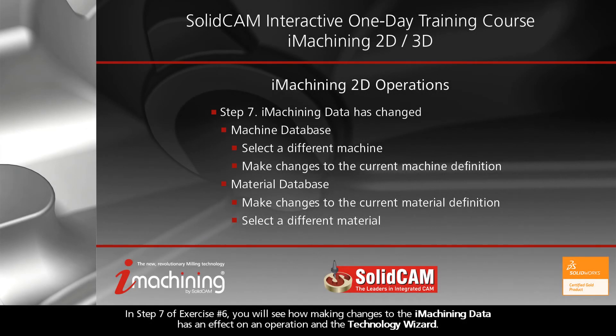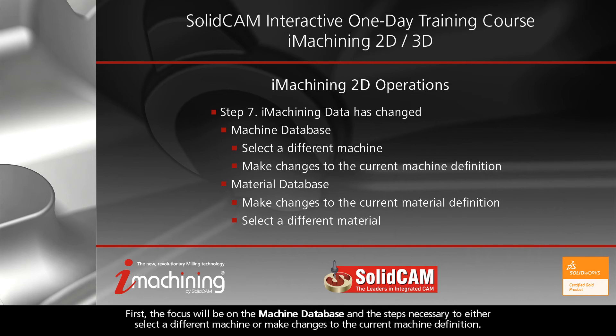In step 7 of exercise number 6, you will see how making changes to the iMachining data has an effect on an operation and the Technology Wizard. First, the focus will be on the machine database and the steps necessary to either select a different machine or make changes to the current machine definition.